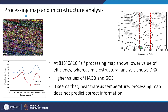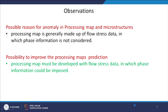To confirm the anomaly at 815°C — which shows lower efficiency despite the microstructure having a high fraction of grains with low grain orientation spread and high fraction of high angle grain boundaries — the microstructure at this condition is fully recrystallized, covered with very fine grains. Yet in my processing map I do not see a high efficiency region. To resolve this anomaly, we concluded that phase information should also be taken as input in the creation of the processing map.